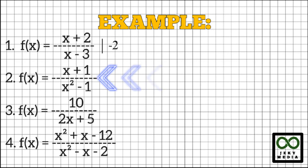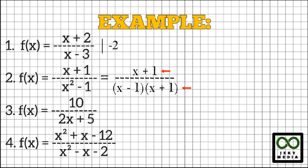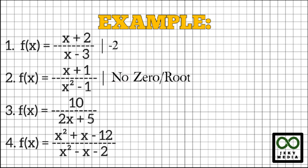Number 2: f(x) equals (x + 1) over (x² − 1). First, let's factor the function. The numerator is in its lowest terms, so let's factor the denominator: x² − 1 has the factors (x − 1) and (x + 1). Notice that (x + 1) is also the same as the numerator. Remember that a factor present in both the numerator and denominator is a removable discontinuity, suggesting a hole in the graph. Canceling out this factor leaves 1 in the numerator. Equating 1 to zero is not allowed. Therefore, there are no zeros in this rational function.